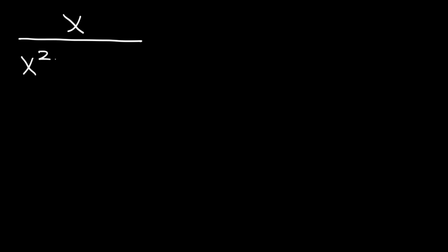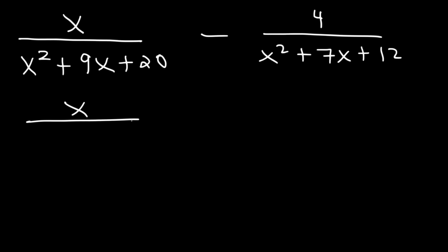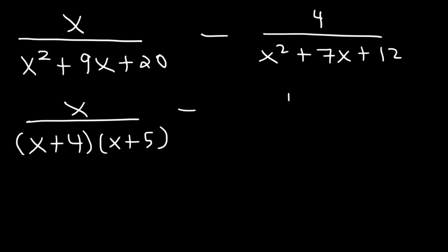Here's another one: x divided by x squared plus 9x plus 20 minus 4 over x squared plus 7x plus 12. Before finding common denominators we should factor completely. What two numbers multiply to 20 and add to 9? That's 4 and 5. What two numbers multiply to 12 and add to 7? That's 3 and 4. So the denominators factor as x plus 4 times x plus 5, and x plus 4 times x plus 3.